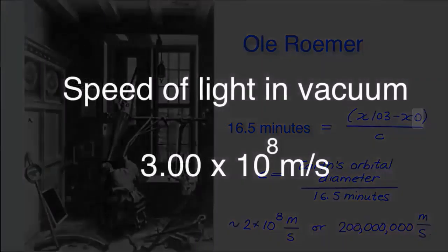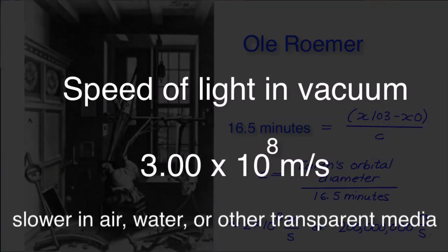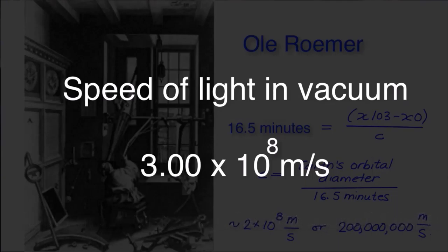Often we round the numerical value of the speed of light to 3.0 times 10 to the eighth meters per second. Light is slower when it passes through air, water, or other transparent media. It is fastest in space or vacuum.